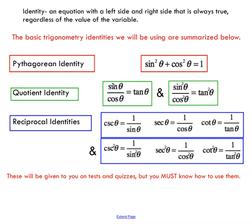Quotient identity, this is sine over cos is equal to tan. I've shown you this in one of my previous video lessons where I talked about the unit circles. You can pop into that one if you're interested in where this one comes from.